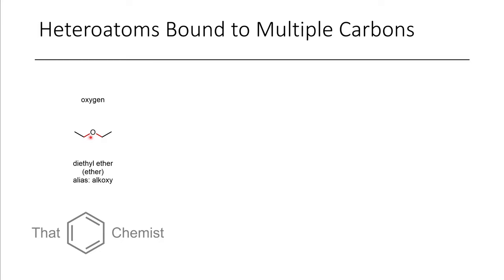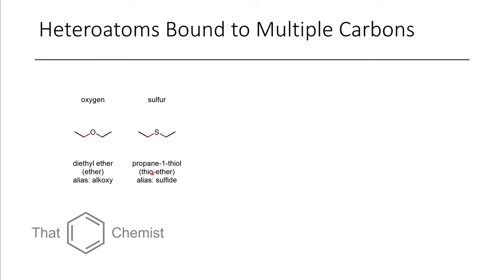Instead of just one carbon connected to an oxygen to form an alcohol, if we have one oxygen with a carbon on either side, we call that an ether. Here we have diethyl ether — a very common solvent used extensively in research. A good way to remember the name is that there's a carbon on 'ether' side. We also have the equivalent functional group with a sulfur, which is called a thioether. A useful rule: if you have an oxygen-containing group but with sulfur instead, just call it the 'thio' version.